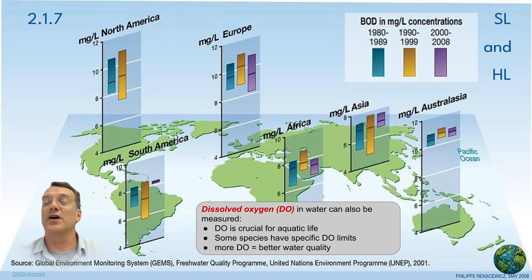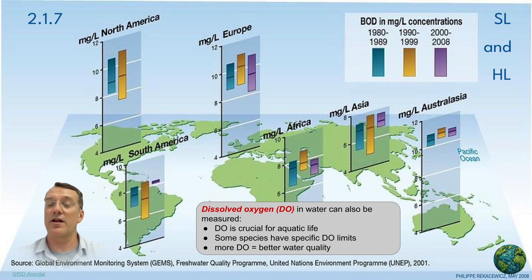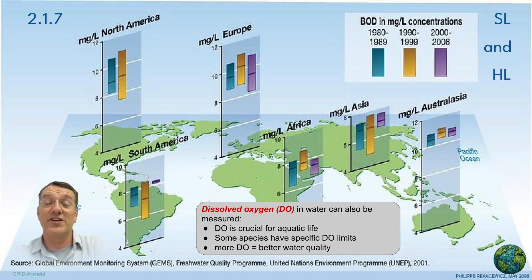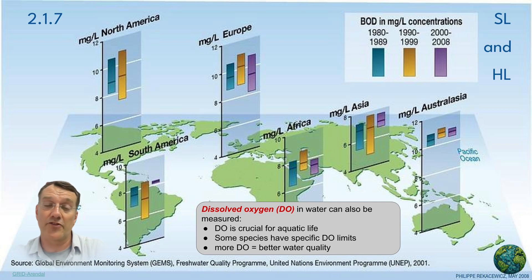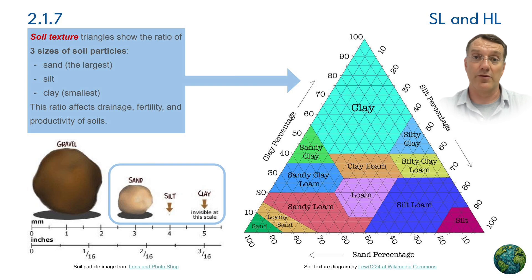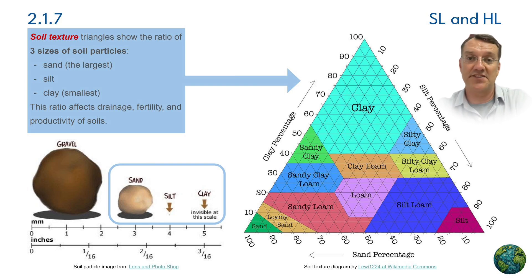Dissolved oxygen levels are another important abiotic factor for the distribution of aquatic organisms, because different species have different tolerance ranges for the amount of dissolved oxygen in water. Soil texture, which is determined by the ratio of sand, silt, and clay particles in a soil,